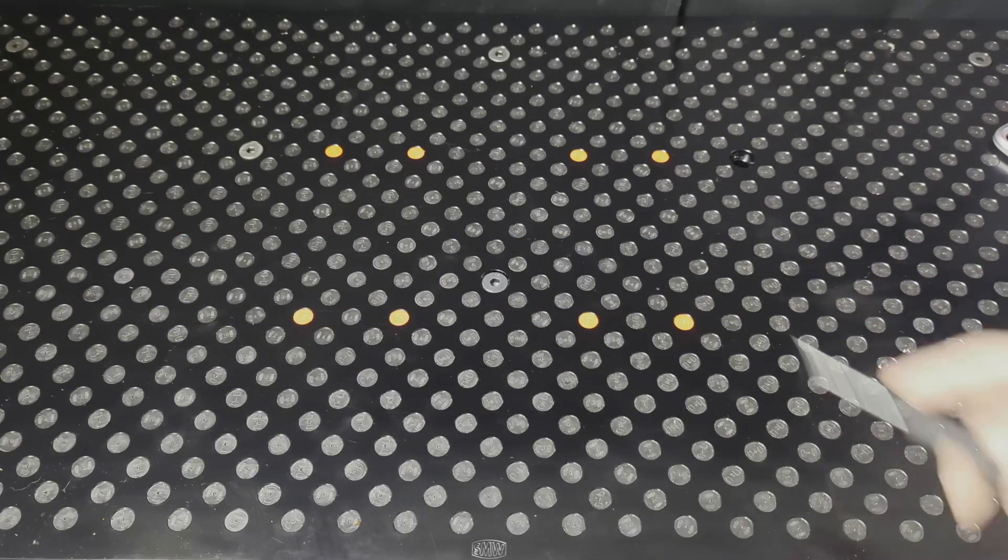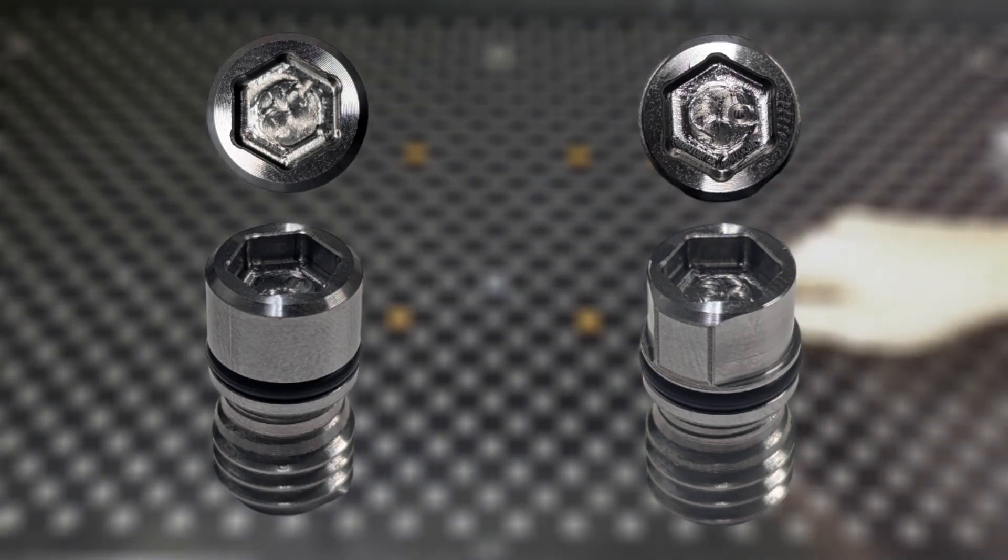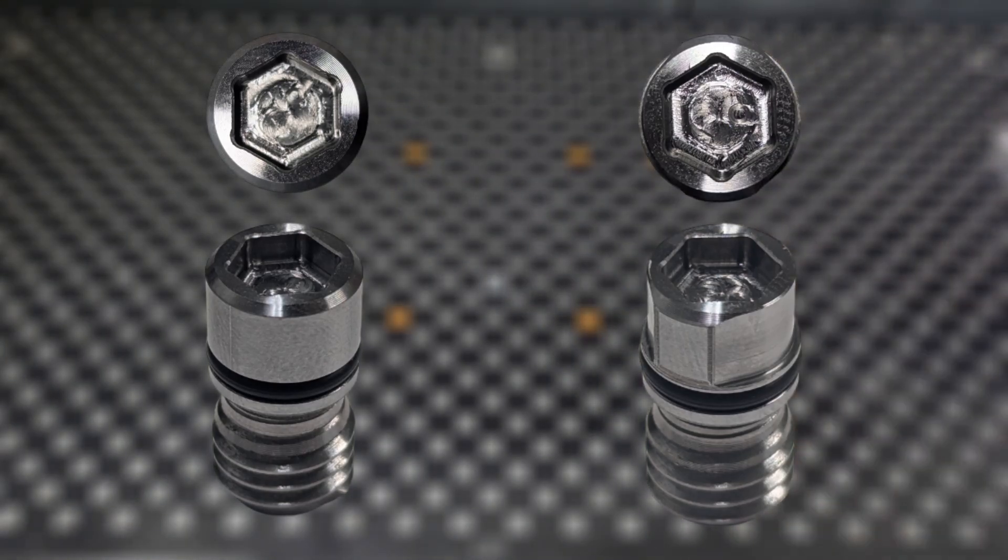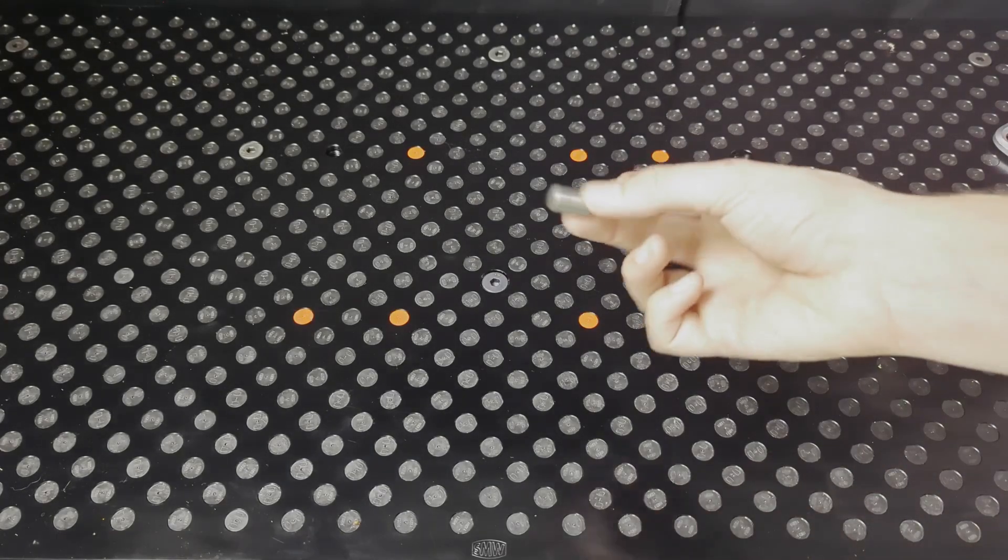Our half-inch fixturing pin is available in two styles, round and diamond. When used correctly, this allows for precise and repeatable location of your fixtures while avoiding the binding and removal issues seen when using two round pins.